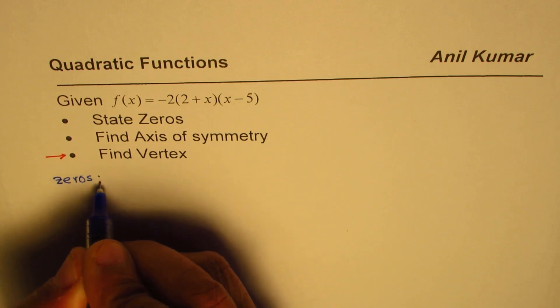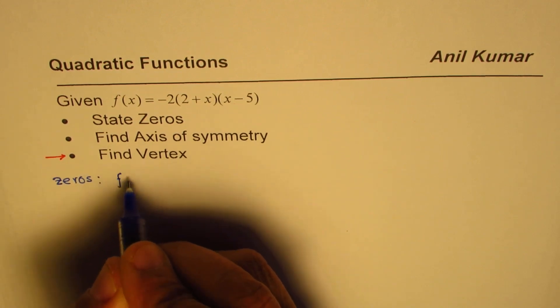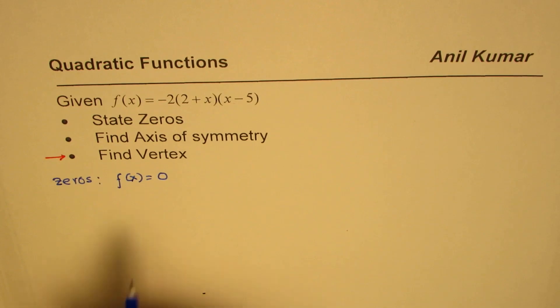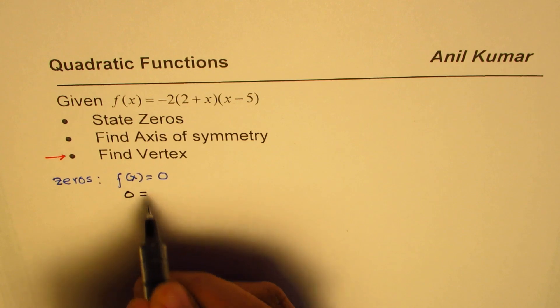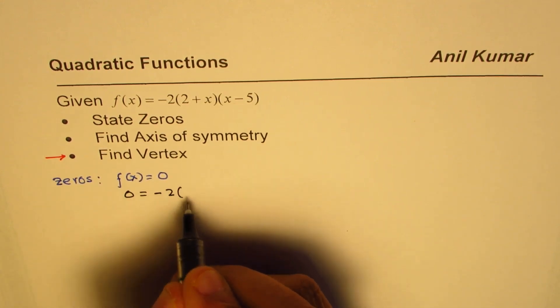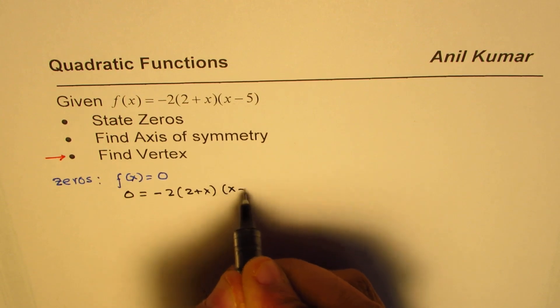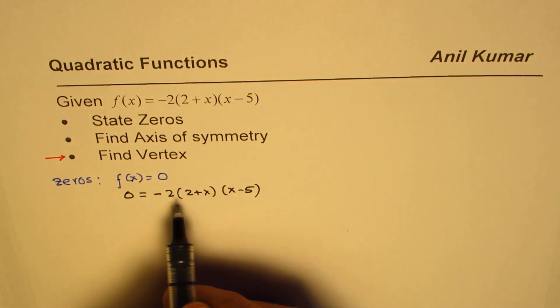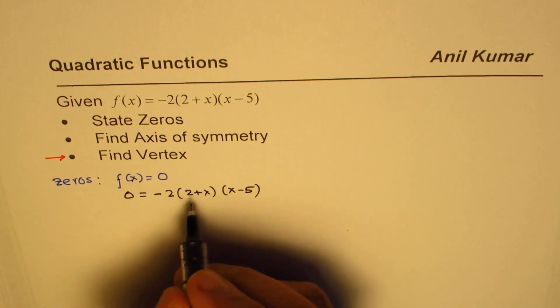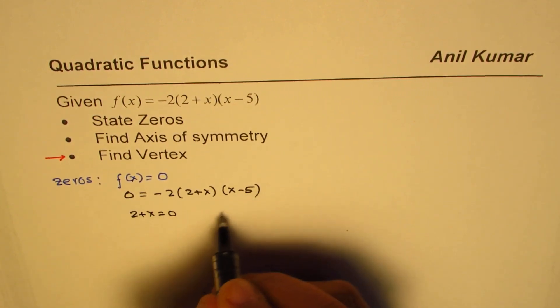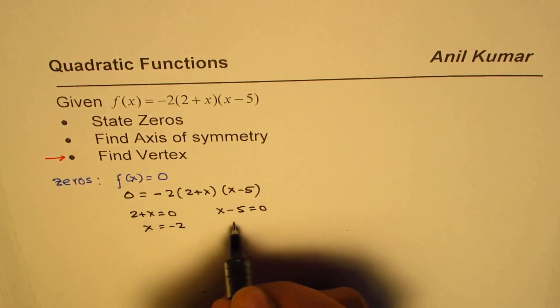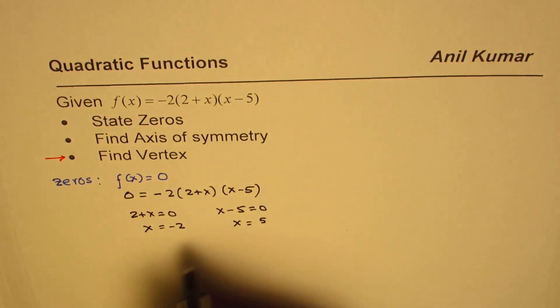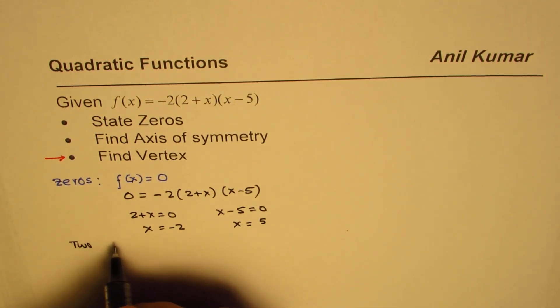Zeros is a point where the value of the function f(x) equals zero. We will equate this equation to zero and find the value of x. We have -2(2+x)(x-5). Clearly this function will be zero when 2+x equals zero or x-5 equals zero. That gives you x = -2 and x = 5.